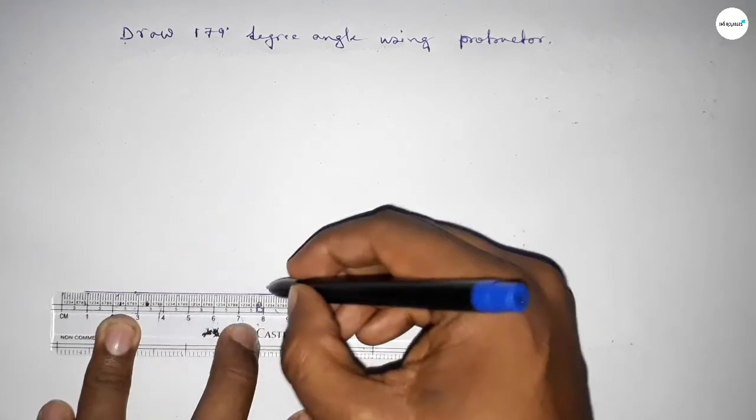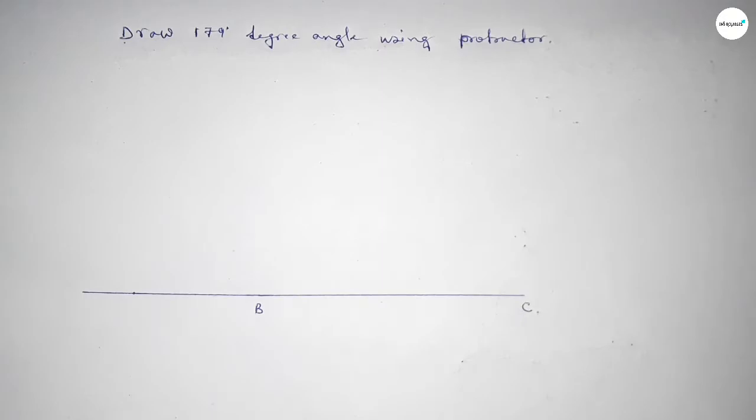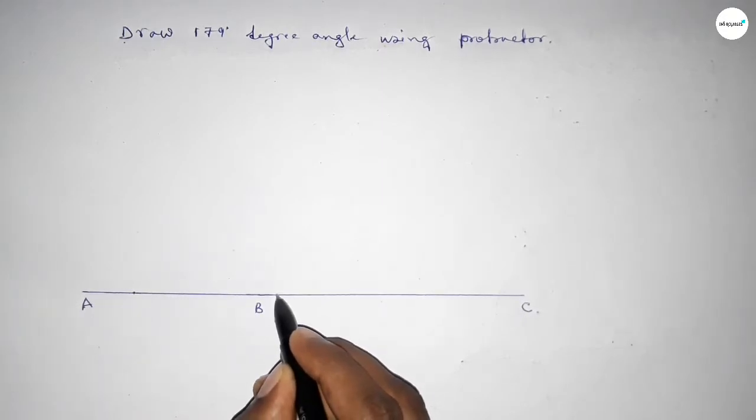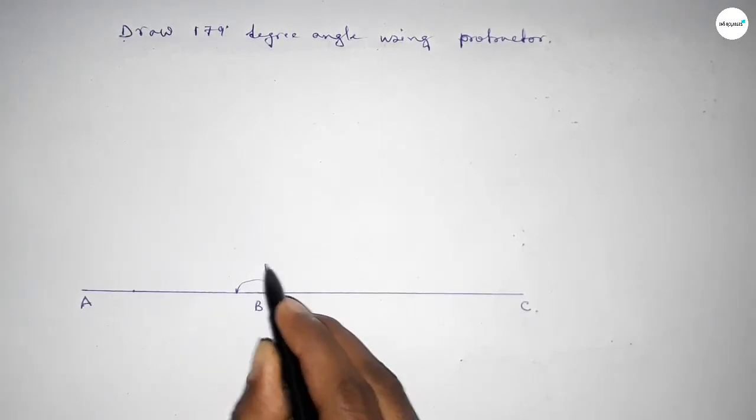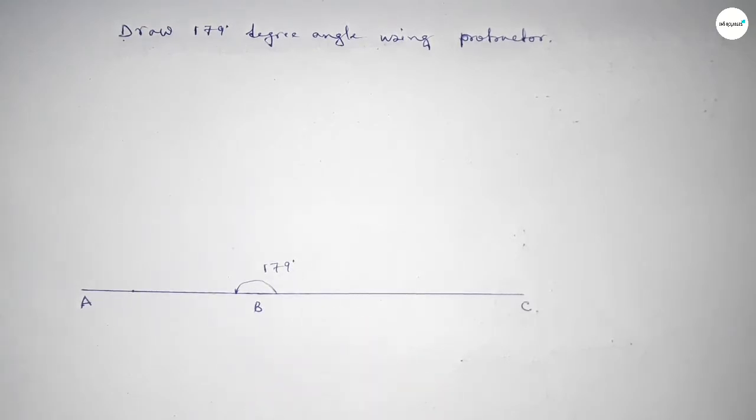Joining this side to get a 179 degree angle and taking a point here. So angle ABC, this is a 179 degree angle. Therefore, angle ABC equals 179 degrees. That's all, thanks for watching.